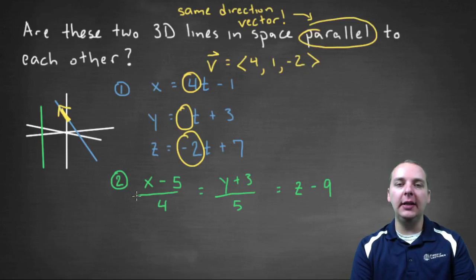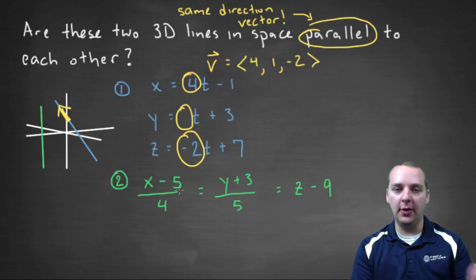And if the green line has a direction vector that's a multiple of 4, 1, negative 2, they'll be parallel. If it's not a scalar multiple of 4, 1, negative 2, then they're not parallel.